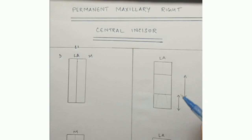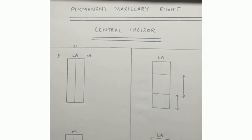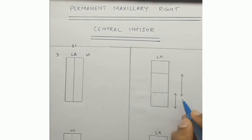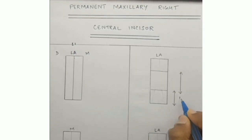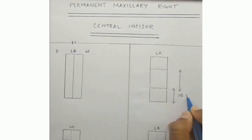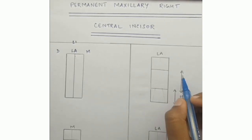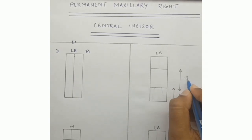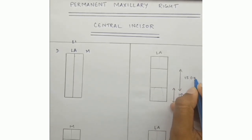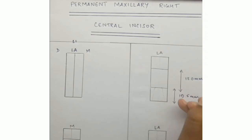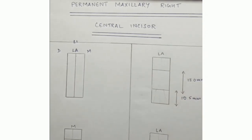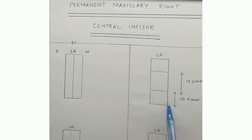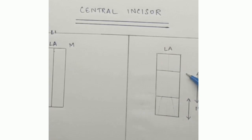Once it's done, we'll start marking the crown and the root length. The crown length is 10.5 mm and the root length is 13 mm. This is the crown part and this is the root part.